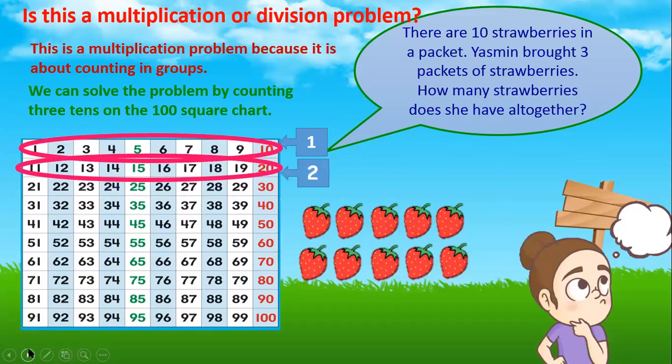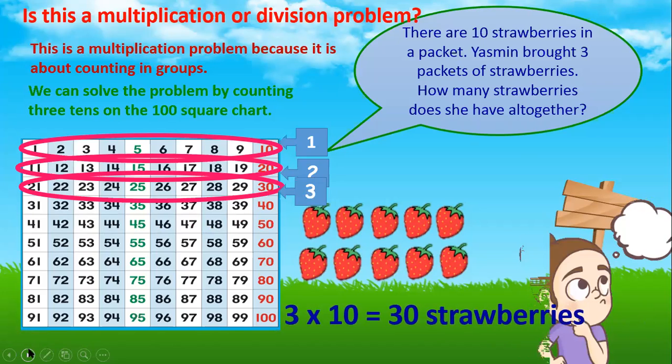1 ten, 2 tens, 3 tens. So 3 times 10 is 30. So there are 30 strawberries altogether.